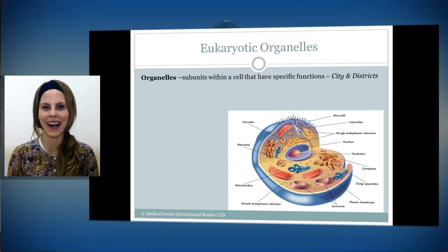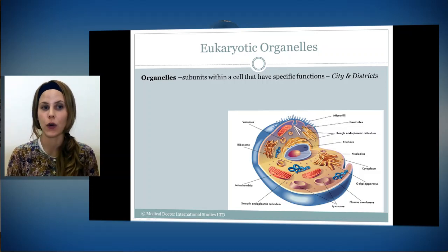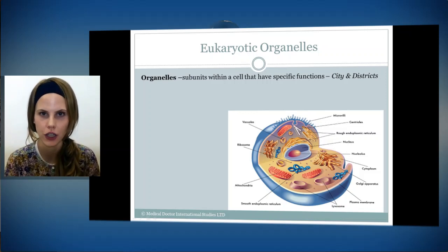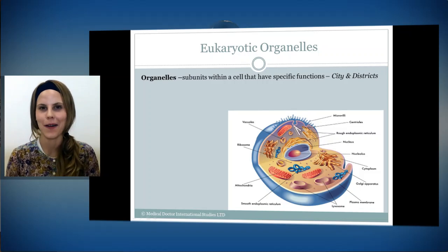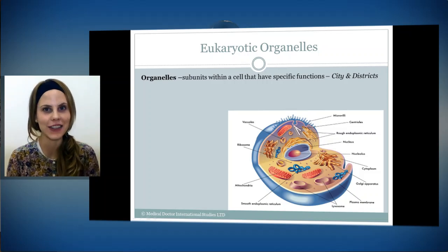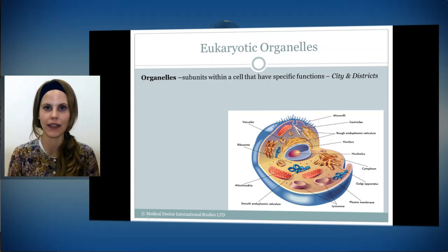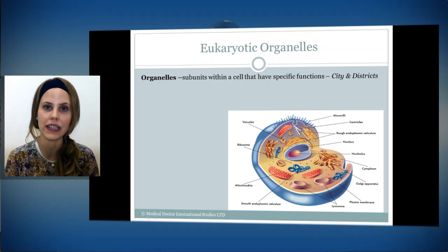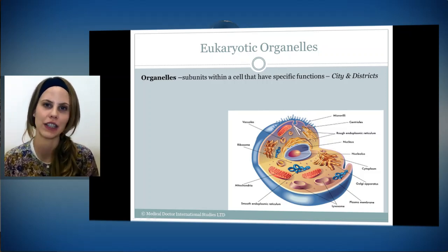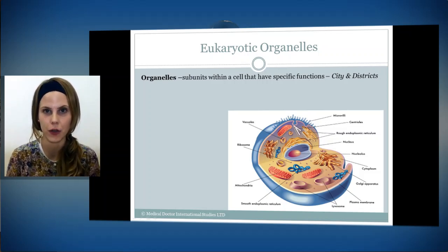Now we're going to take a look inside the eukaryote cell and the different features. Organelles are subunits within the cell, and they each have a specific function. The cell has districts. The way I like to think about it is like my hometown, New York City. New York City has different districts — the upper west side, upper east side, lower west side, west village, lower east side, east village, Chelsea, Midtown. It has many different districts and areas within the city, and each of these areas has a specific function that it helps with.